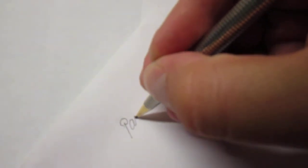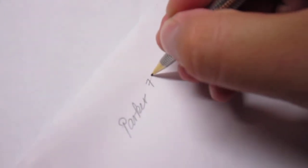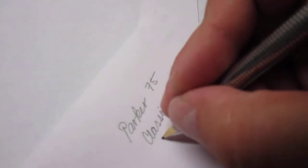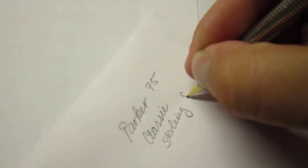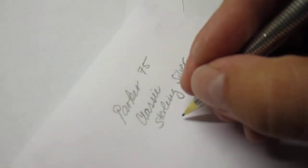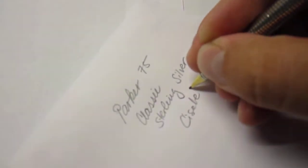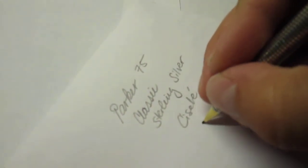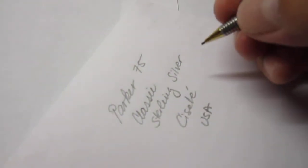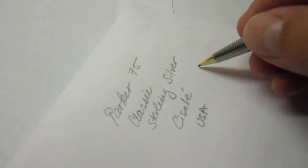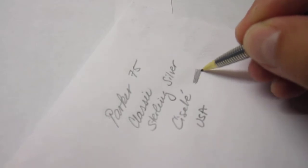So let's take a look. This is the Parker 75 Classic Sterling Silver made in USA. I like the 0.9 millimeter LEDs.